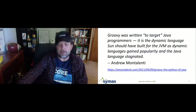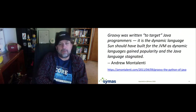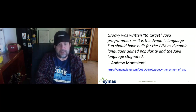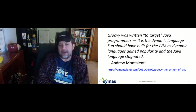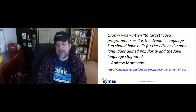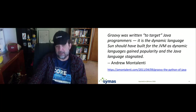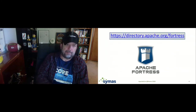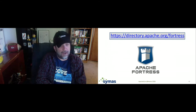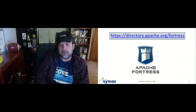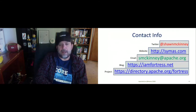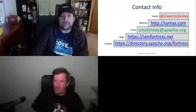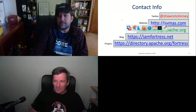Closing thoughts — another quote: 'Groovy was written to target Java programmers. It's the dynamic language Sun should have built for the JVM as dynamic languages gained popularity and the Java language stagnated.' That article was written back in 2009, so it hasn't captured all the advancements that have happened to Groovy since then, but for someone like me — old to Java and new to Groovy — that's a good place to start. Apache Fortress has a link to our project. If you want to try this out or have questions, join our mailing list and ask us. We'd be happy to support you there.